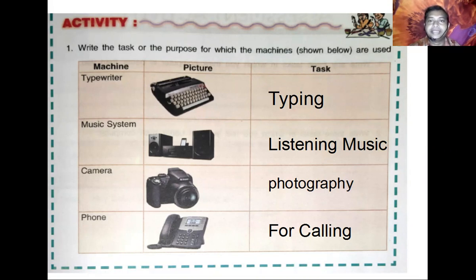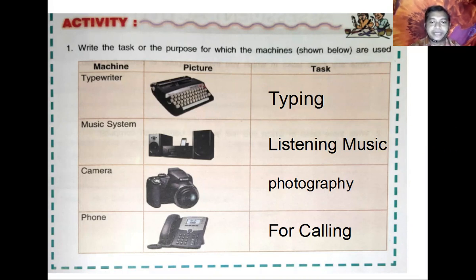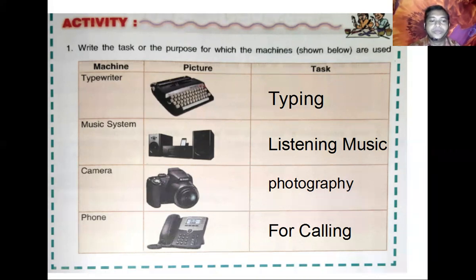Machine number three is a camera. The task of a camera is photography. And next, machine number four is the phone. The task of the phone is calling — the purpose of the phone is calling.